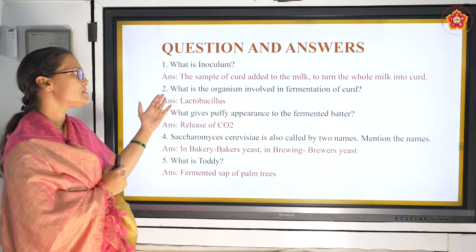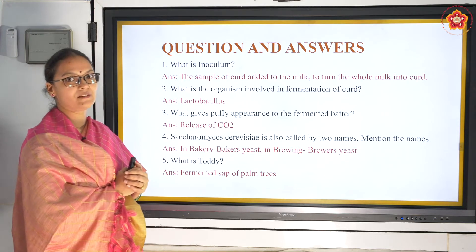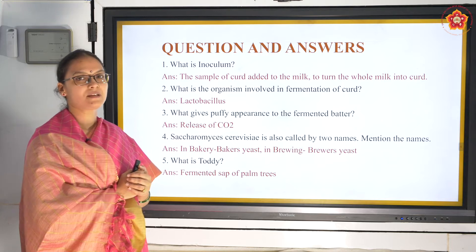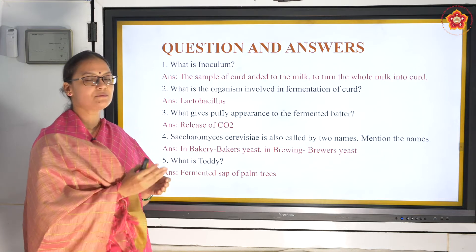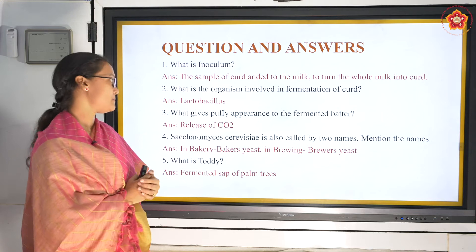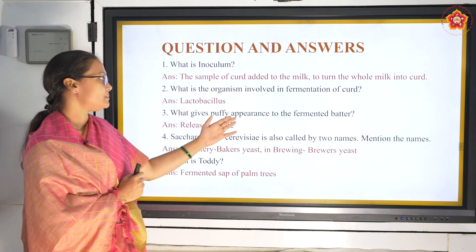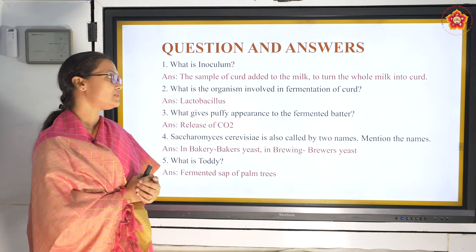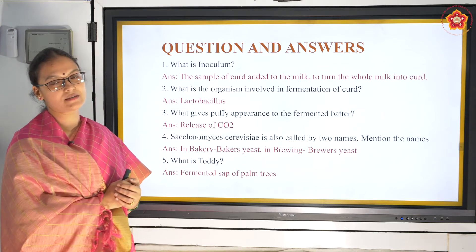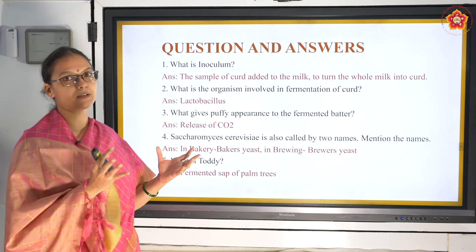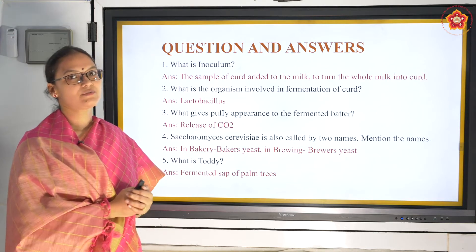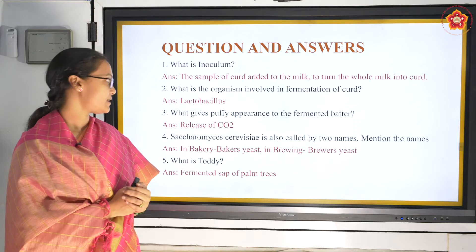What is the organism involved in fermentation? Lactobacillus is the organism. It releases lactic acid, which will break the milk protein. What gives puffy appearance to the fermented batter? Release of carbon dioxide - the puffed up appearance of the batter is because of release of carbon dioxide.